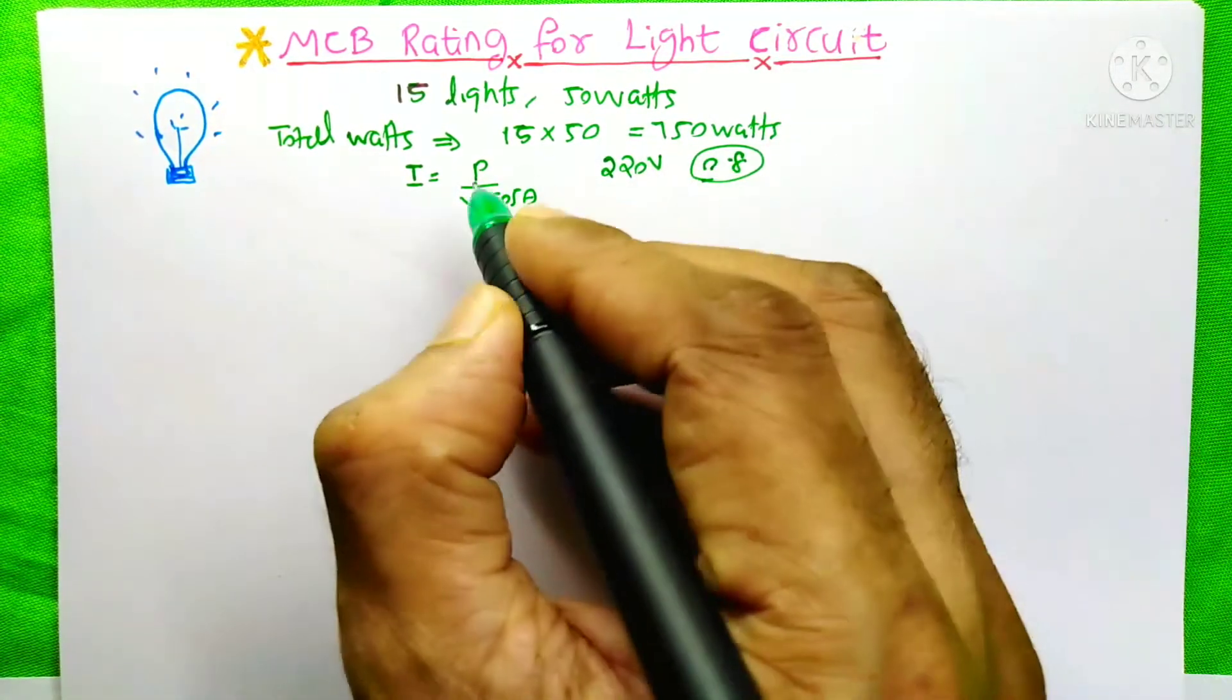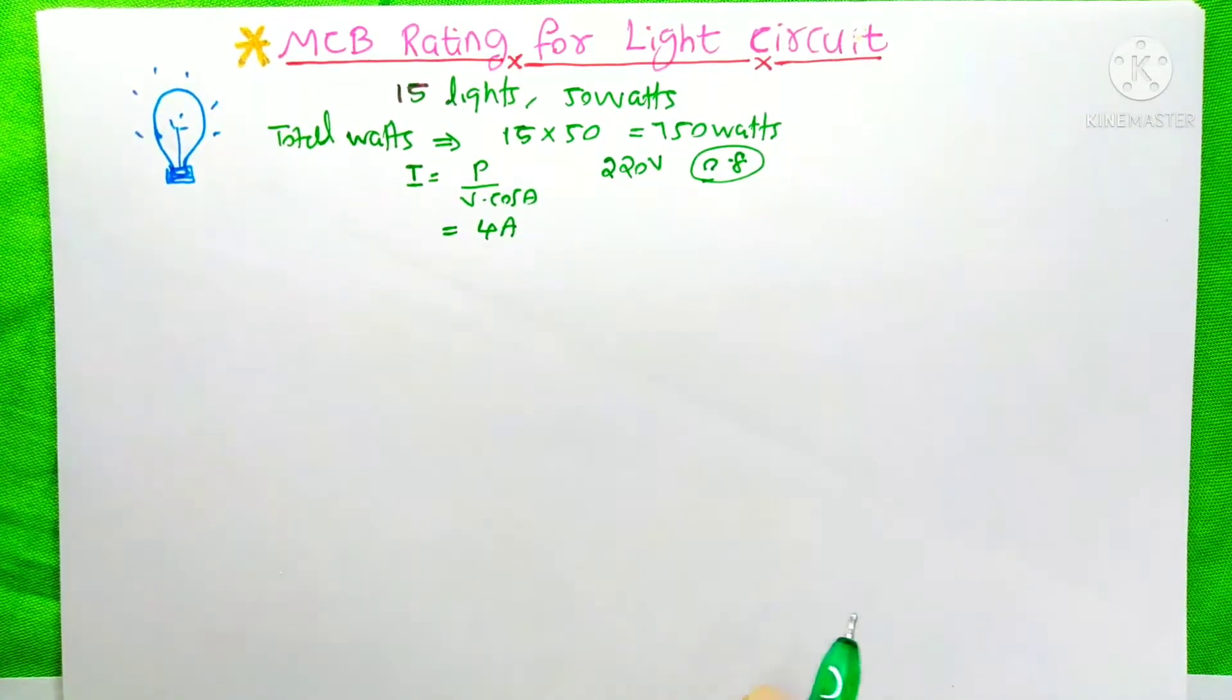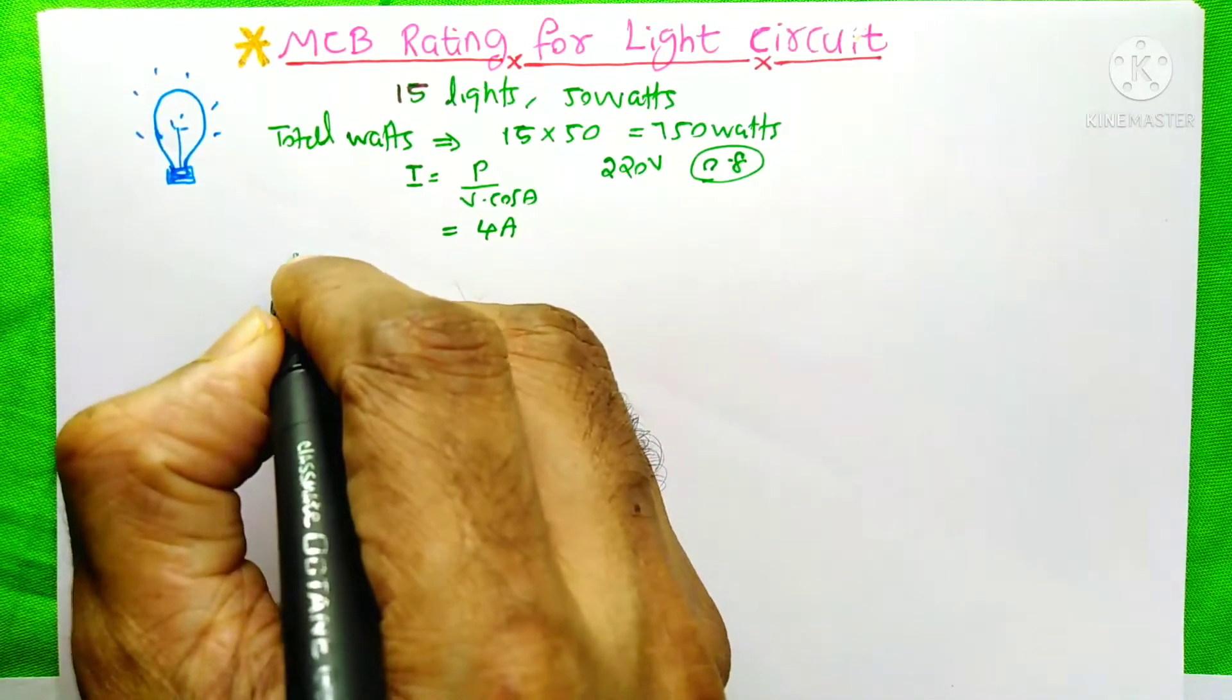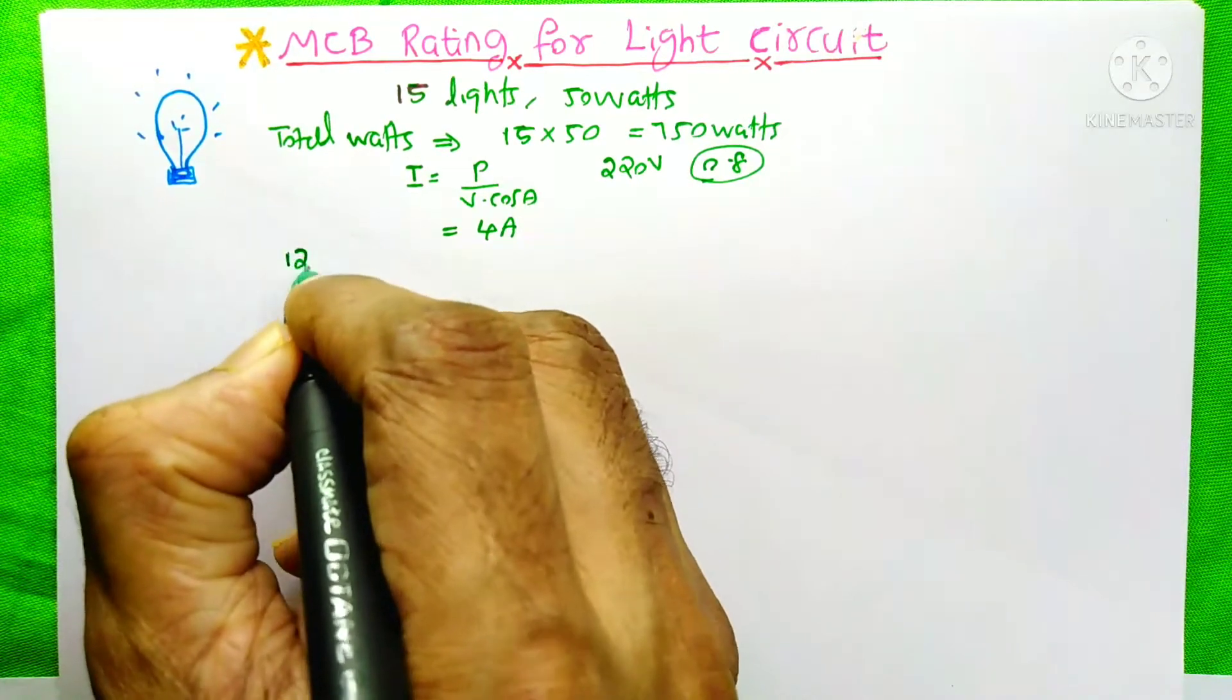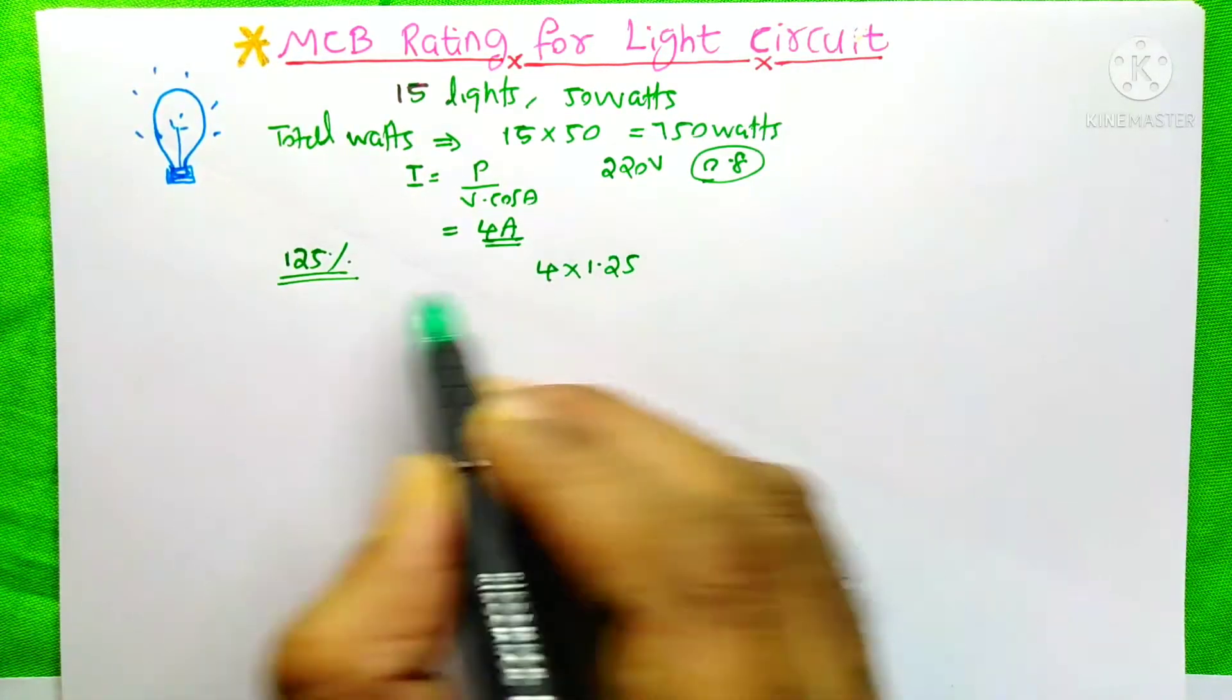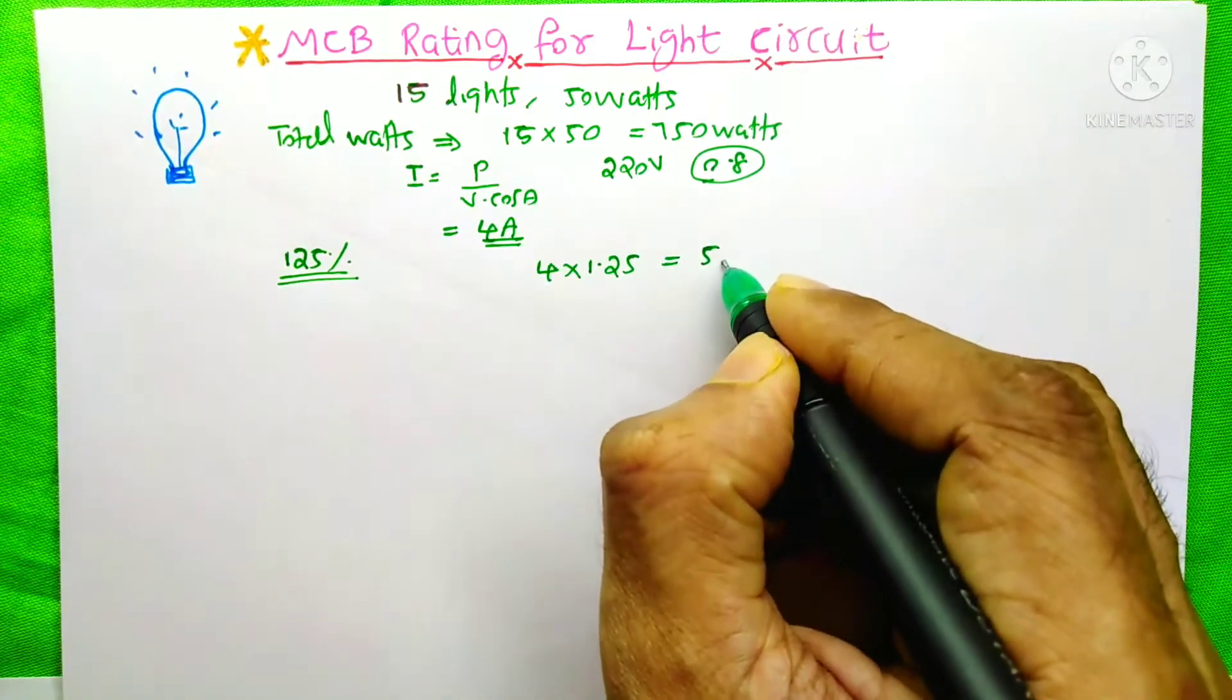If you put all these values in this equation, the answer will be around 4A. To choose an MCB, we need to set a safety margin of 25%, which means a total of 125% safety margin. So 4A times 1.25 equals around 5A.